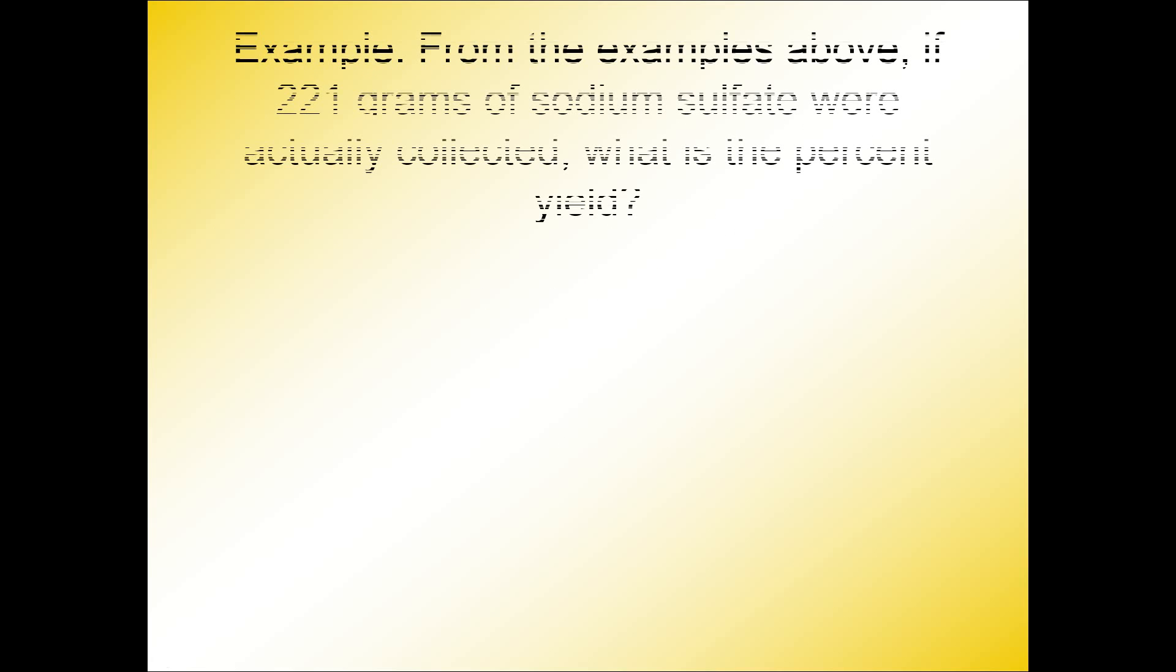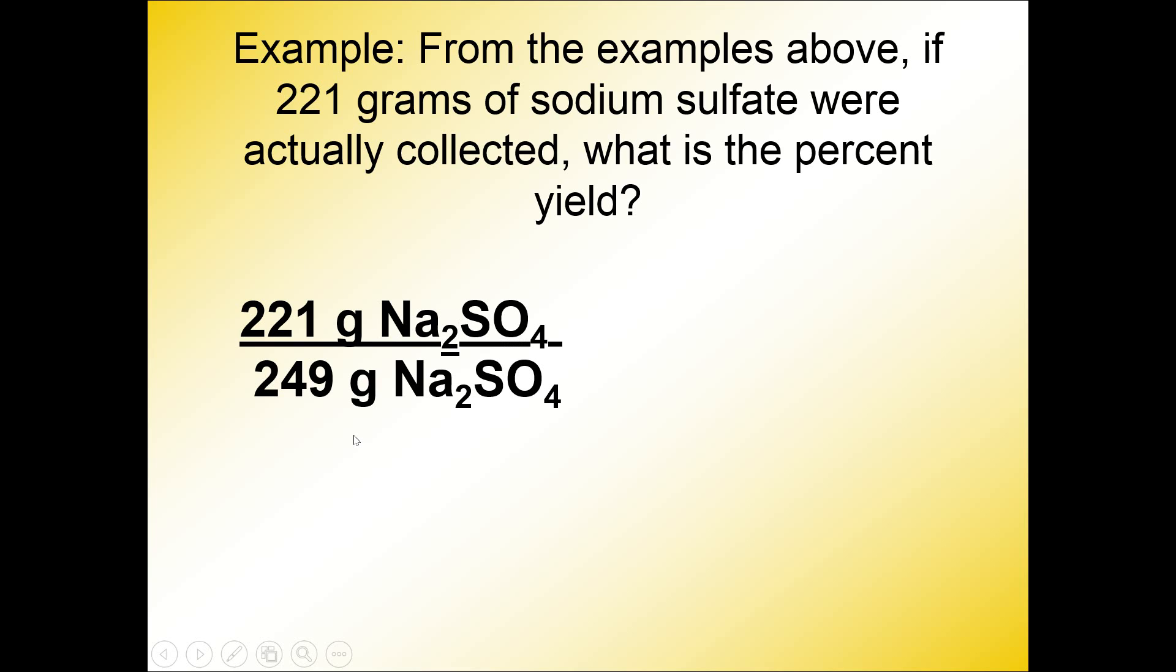From the examples above, so we're referring to that 249 grams that we just calculated. If 221 grams of sodium sulfate were actually collected, meaning you're in a lab, you collect the amount, and 221 grams was recovered, we want to calculate the percent yield. So there is that 221 grams of sodium sulfate. We have the actual in the numerator divided by the theoretical, which we calculated two slides ago times 100, this is the percent yield for the problem, 88.8%.